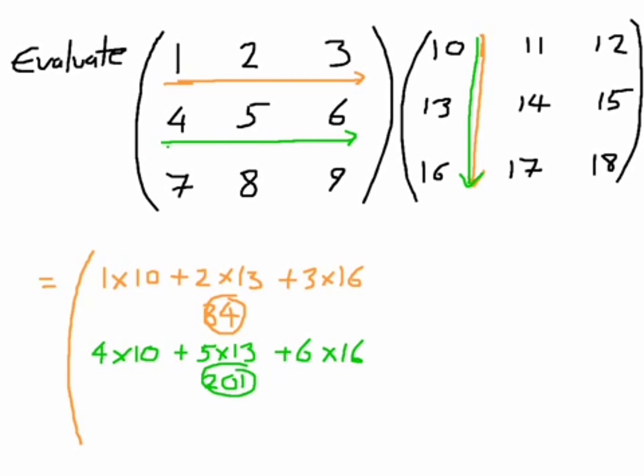And finally, the bottom of the first column. We're going across the bottom, but still working on this first column. So I'm going to have 7 times 10 plus 8 times 13 plus 9 times 16, and I've got the answer 318.